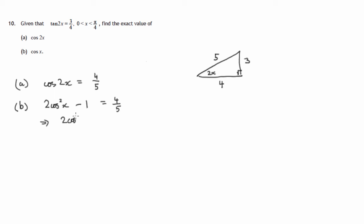Let's add 1 to both sides. If we add 1 to 4 fifths, we're adding 5 fifths to 4 fifths, so that's 9 fifths. And let's divide both sides by 2, or take a half of both sides. A half of 9 fifths would be 9 tenths. So cos² x equals 9 tenths.